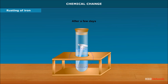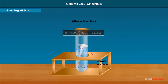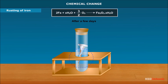The shining of nail disappears and it is covered with a brown surface. Iron is converted into hydrated iron oxide.